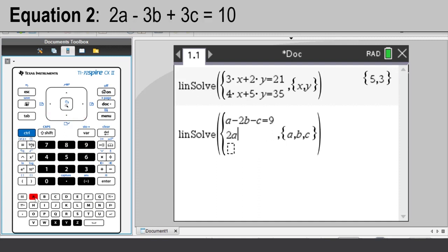2A subtract 3B add 3C equals 10. Press TAB to move to the next field and enter the third equation.